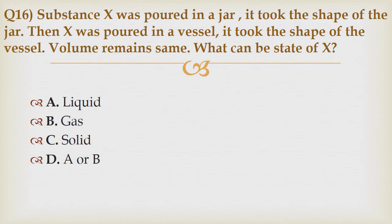Question number 16. Substance X was poured in a jar — it took the shape of the jar. Then X was poured in a vessel — it took the shape of the vessel. Volume remains the same. What can be the state of X? Option A: Liquid. Option B: Gas. Option C: Solid. Option D: A or B. The correct answer is Option A — Liquid.